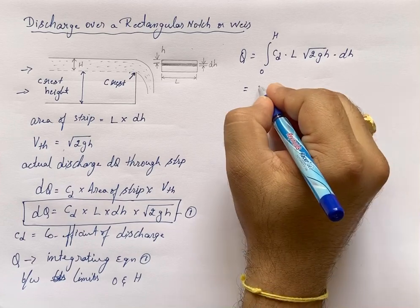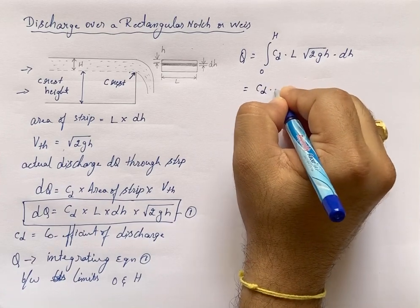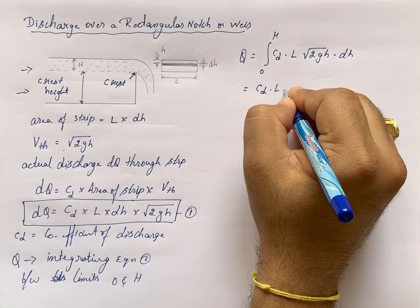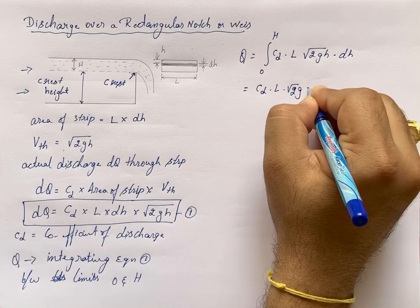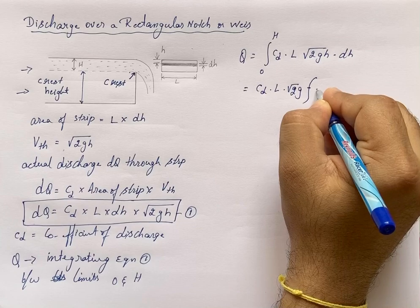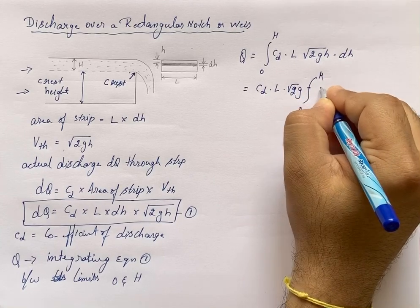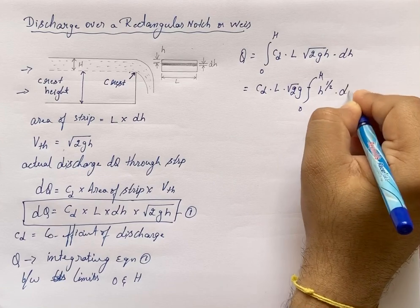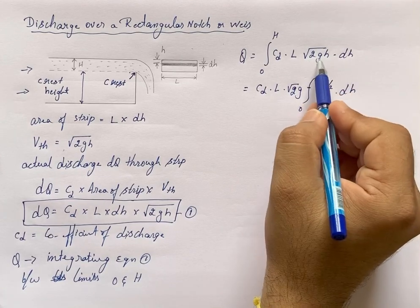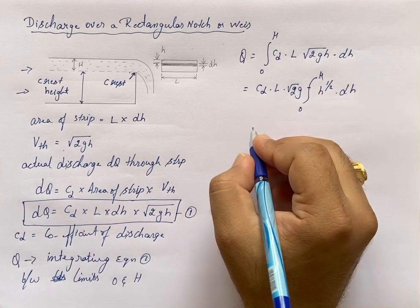This becomes Cd × L × √(2g) times the integration from 0 to H of H^(1/2) dH. I have taken all the constants outside the limit.